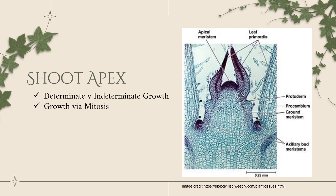Here's a quick peek at a micrograph of the shoot apex of a plant — the very tip of the plant where lots of growth is happening. Growth happens because of meristem tissue. Meristem is the stem cell tissue of plants, and growth happens via mitosis. Some growth in plants is determinate, meaning there's a pre-set size the plant will grow to and then stop. Flowers tend to have determinate growth patterns.